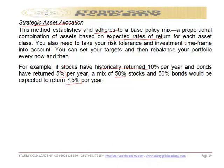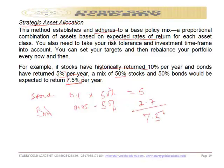To explain how 7.5% is calculated: if stocks yield 10% per annum, which is 0.1, and bonds yield 5%, and your mix is 50-50, then 50% multiplied by 10% gives you 5%, and 50% multiplied by 5% gives you 2.5%, making a total of 7.5%. So that is strategic allocation — you determine the allocation based on the kind of returns you expect from each asset class.